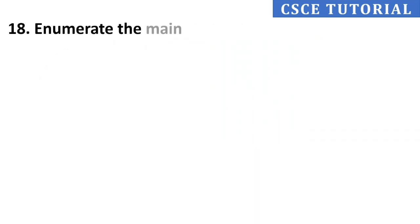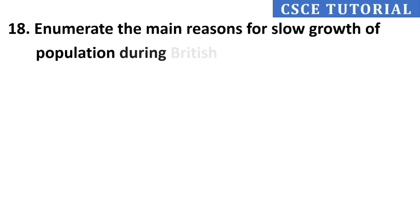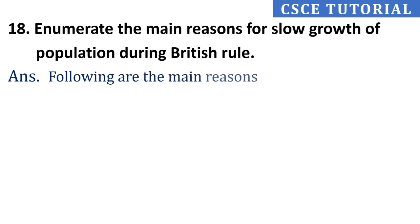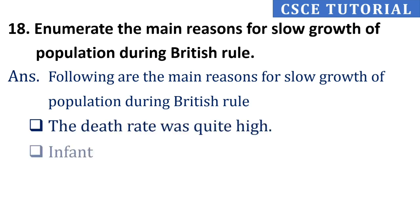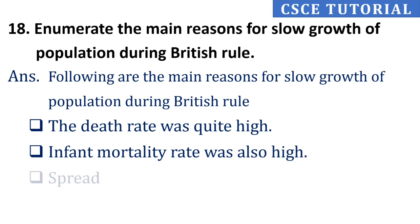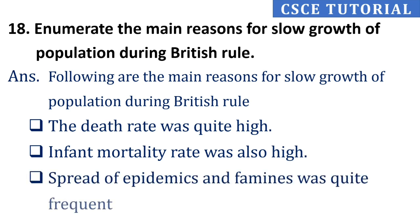Eighteenth question: Enumerate the main reasons for slow growth of population during British rule. The main reasons are: the death rate was quite high, infant mortality rate was also high, and the spread of epidemics and famines was quite frequent. Because health facilities were not good, death rate was very high, and therefore the population growth was very slow during British rule.